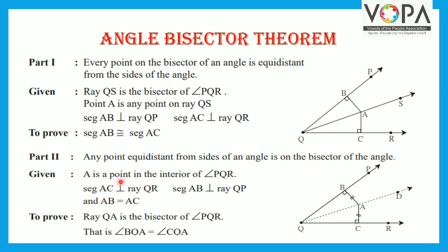Here, point A is in the interior of angle PQR. Segment AC is perpendicular to ray QR. Segment AB is perpendicular to ray PQ. And AB is equal to AC, which is given. You have to prove that ray QA is the bisector of angle PQR, that is, angle BQA is equal to angle CQA.